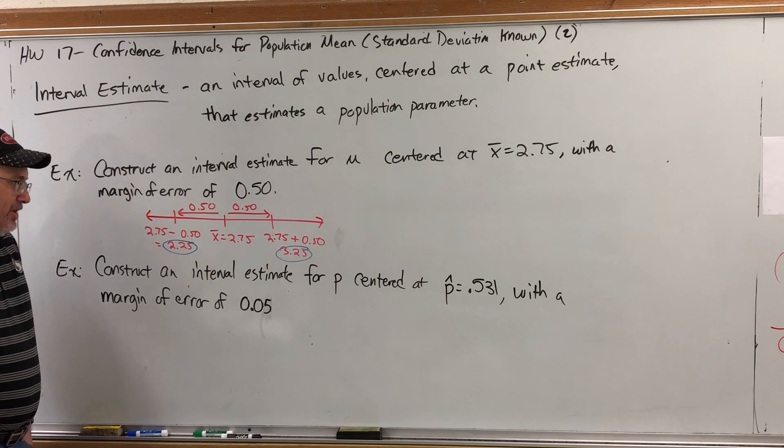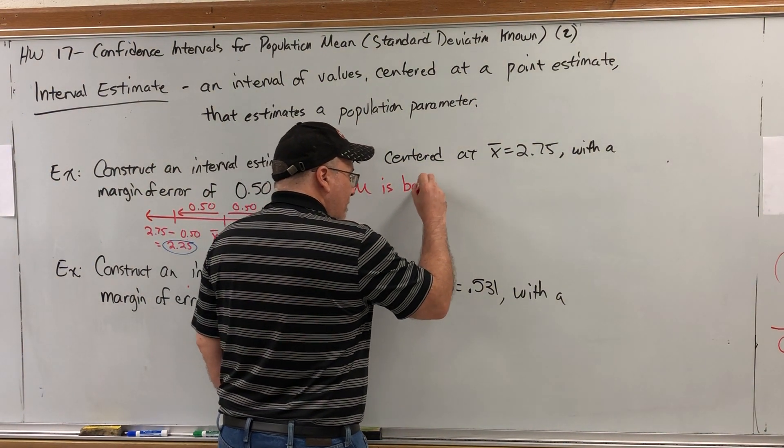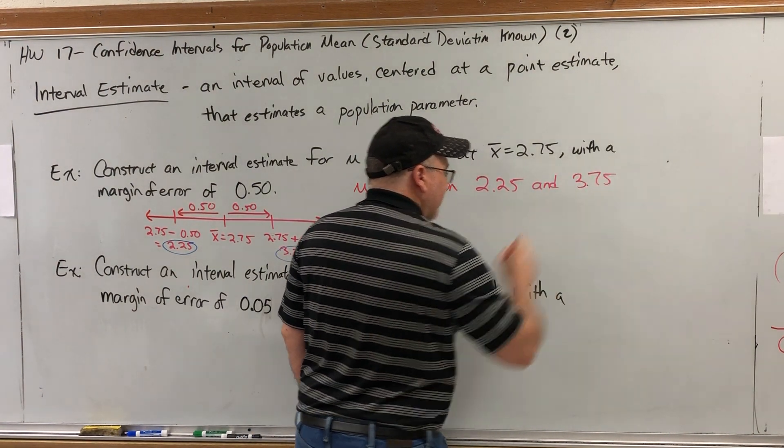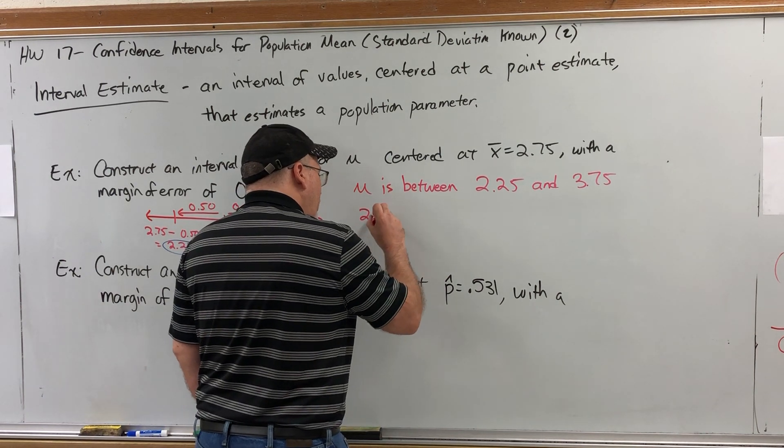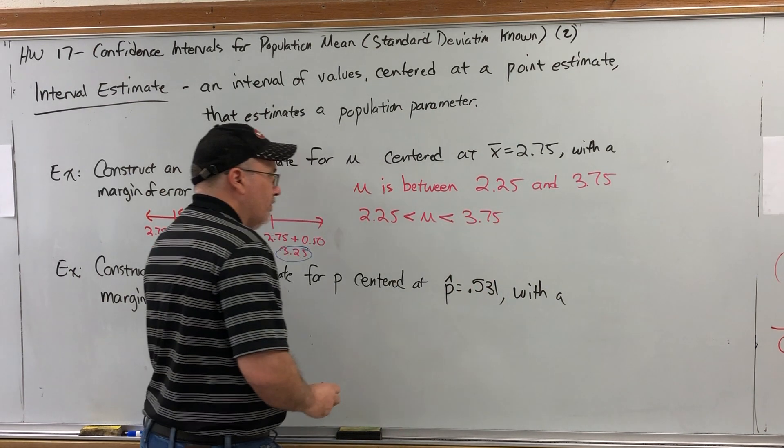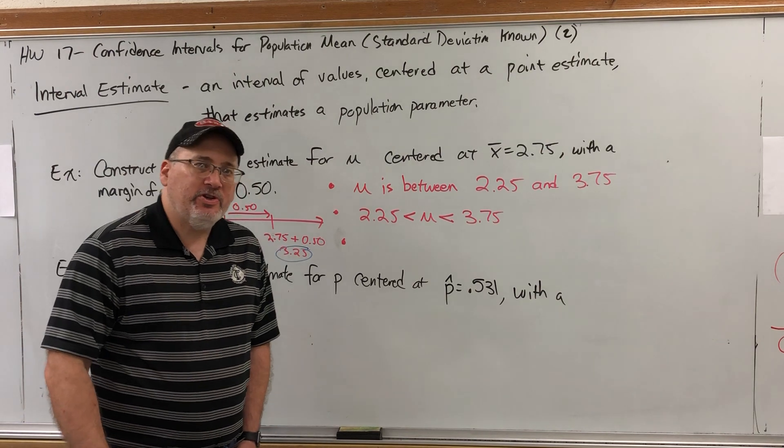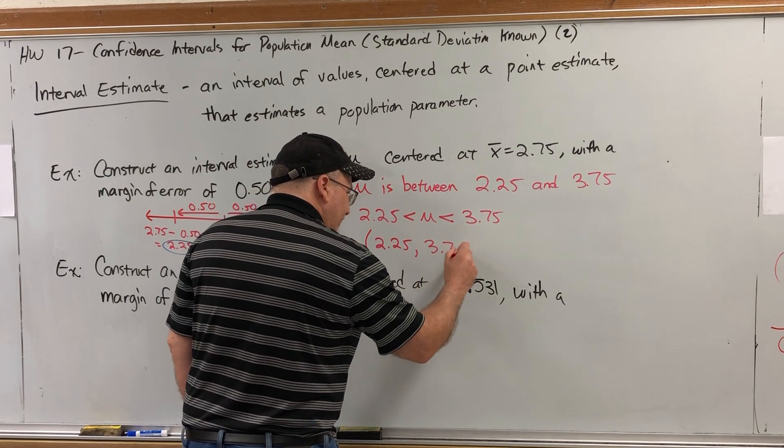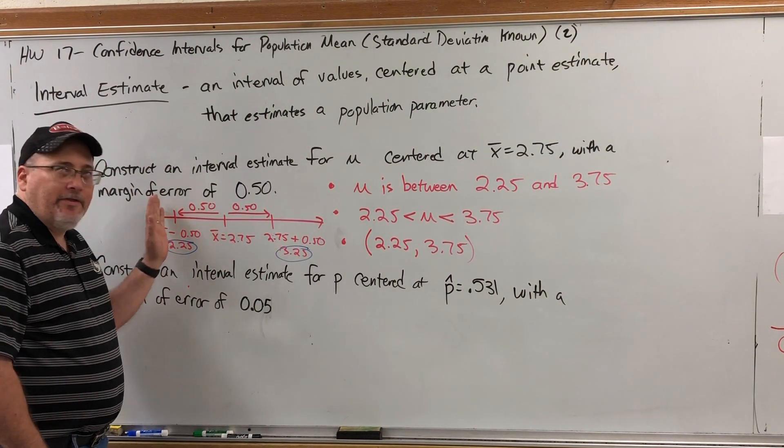How can we write this interval? We can write it a variety of ways. We can say that mu is between 2.25 and 3.25. We can also write it in symbols by saying 2.25 is less than mu and mu is less than 3.25. Or in interval notation we can say open parentheses 2.25 comma 3.25. But all three of these mean the same thing.